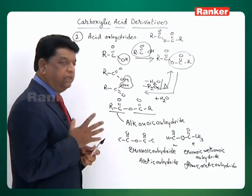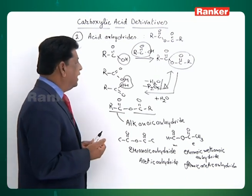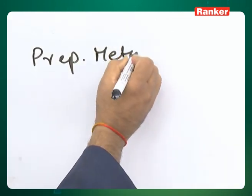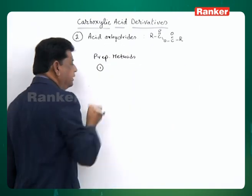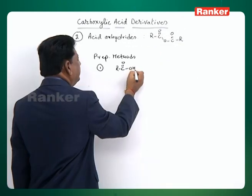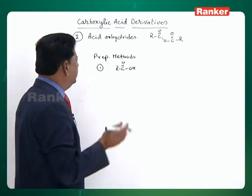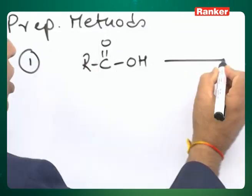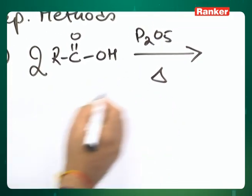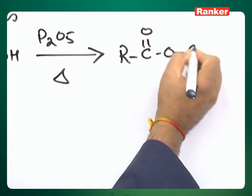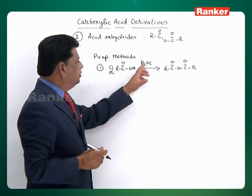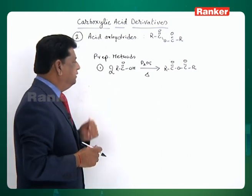Now let us go to the preparation of acid anhydrides. One method is directly from the carboxylic acid. When you take any carboxylic acid — except formic acid, which is itself unstable and its anhydride is also unstable — and heat it with P2O5, two carboxylic acids condense and generate the anhydride. The water removed from the two acids goes with P2O5 and corresponding phosphoric acid is formed.